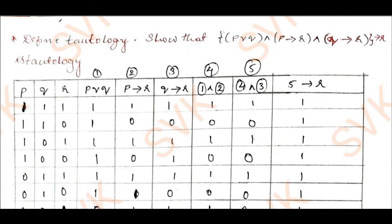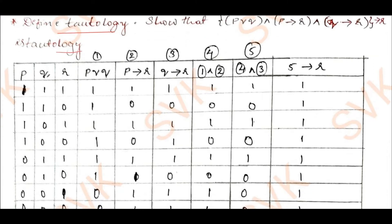For module 5, you can refer to my previous videos. You can go through the solved model question paper of 18MAT41 scheme — I have solved module 5 problems there. The link will be provided in the description. Now, they have asked: define tautology and show that the given compound proposition is a tautology. I have constructed the truth table here.